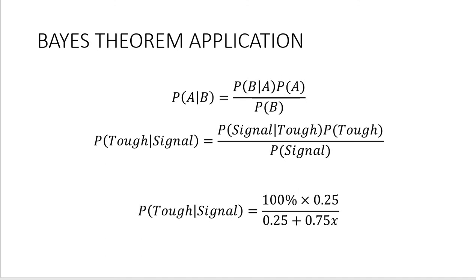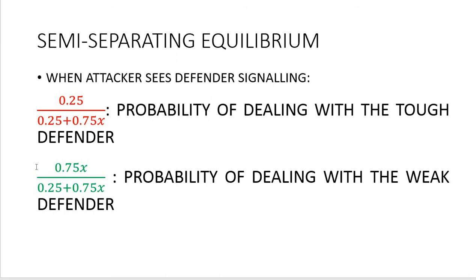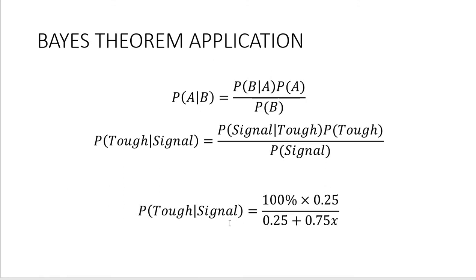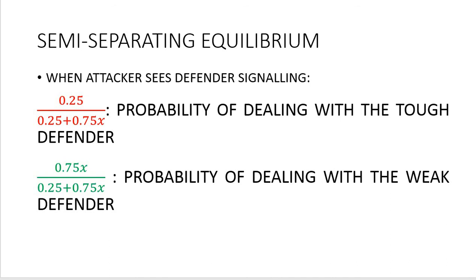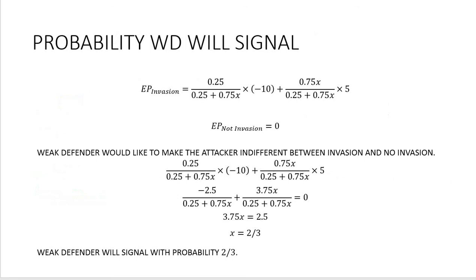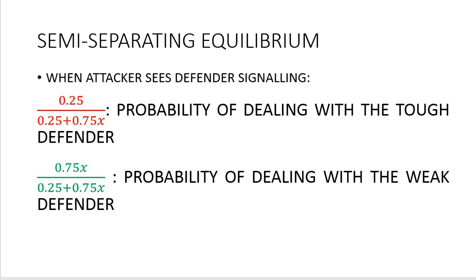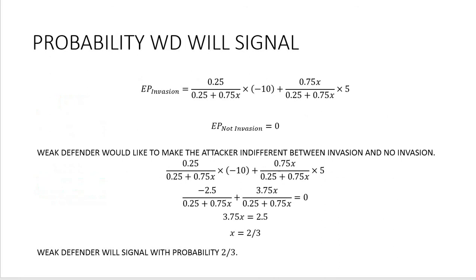Analogously, the probability of dealing with a weak defender given signaling is the complementary expression. So we have the posterior probabilities calculated for both tough and weak defenders. Now we can calculate the expected payoff of invasion using these updated probabilities. Here, instead of the prior probabilities of tough or weak defender, we insert the conditional probabilities of dealing with tough and weak defenders respectively — conditional on the attacker observing the defender signaling.